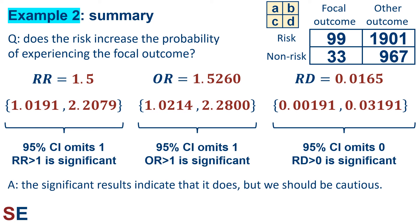The significant results indicate that the risk factor increases the chances of the focal outcome in the population, but we should be cautious. While our confidence intervals indicate there's a 95% chance the risk factor is associated with an increased probability of the focal outcome, this isn't 100%. The confidence intervals don't include 1 or 0, but they are quite close. There's a small chance — less than 5% but not 0 — that the risk factor does not increase the probability, and we might be making a Type 1 error.